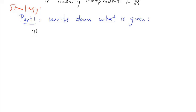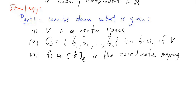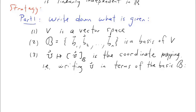Here's our strategy. Part one: write down everything that is given. In other words, v is a vector space; b is a basis of v; and this is our notation for the coordinate mapping of v into Rn relative to basis b.